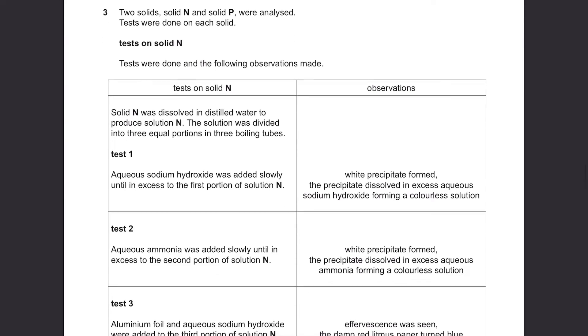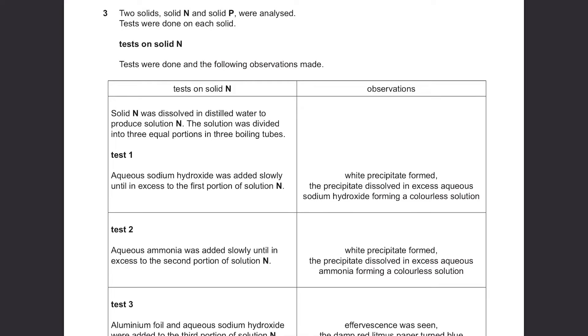Question 3: Two solids, solid N and solid P were analyzed. Tests were done on each solid. Solid N was dissolved in distilled water to produce solution N, divided into 3 equal portions in 3 boiling tubes. Test 1: Aqueous sodium hydroxide was added slowly until in excess. White precipitate was formed and the precipitate dissolved in excess aqueous sodium hydroxide, forming a colorless solution. This is a test for cations. If you get white precipitate and it dissolves in excess sodium hydroxide, there can be two answers: aluminum or zinc. We don't know which one yet.